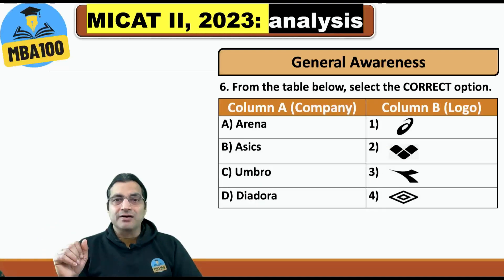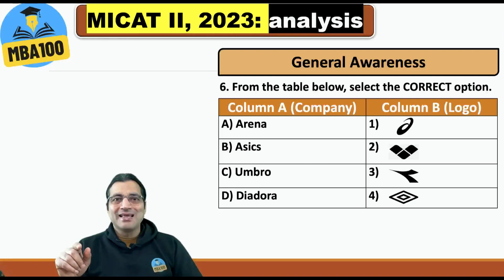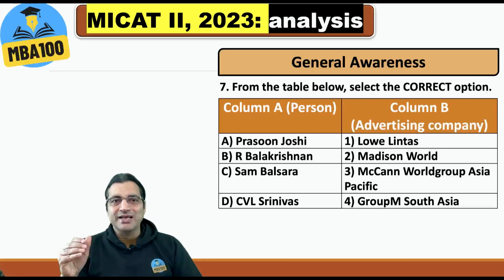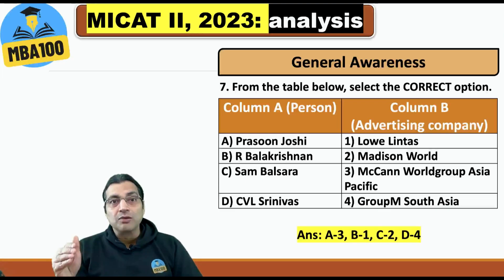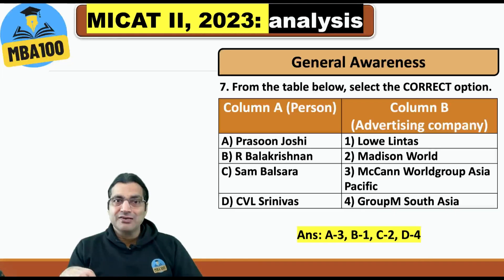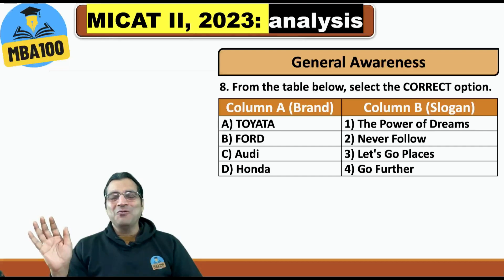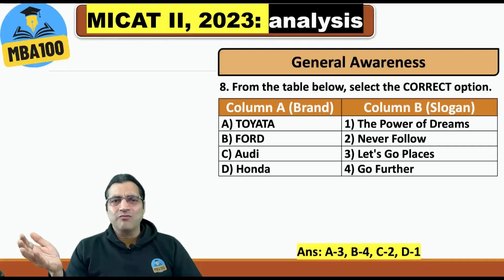From the table, select the correct option. Can you spot two A's in the logos? If you can, Arena and Isaacs had to come from 1 and 2 — so the answer was A2, B1, C4, and D3. Another slightly difficult question had the answer A3, B1, C2, and D4 — though to the best of memory, this combination may not have been among the options, so please do correct if wrong. Another doable question: Toyota 'takes you two places' — so A3, B4, C2, and D1.